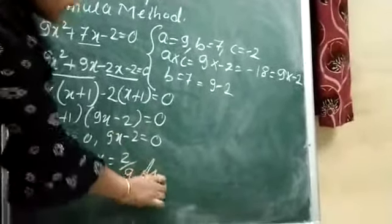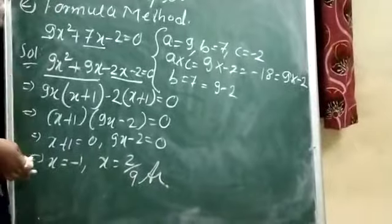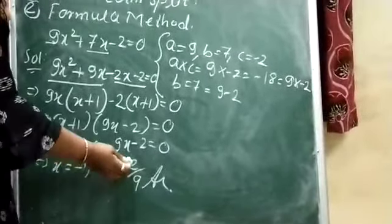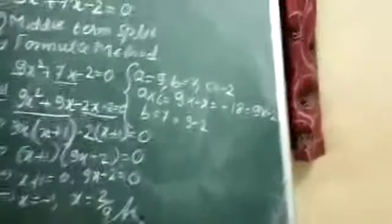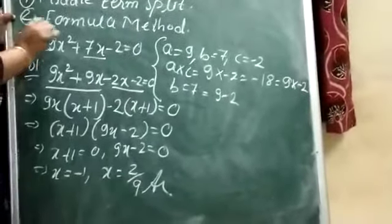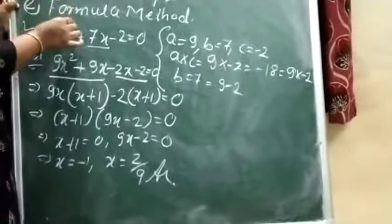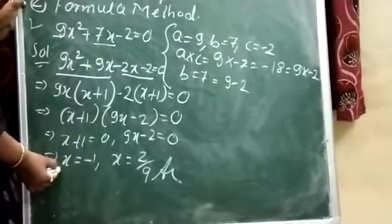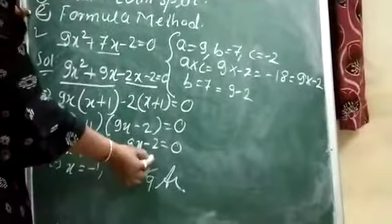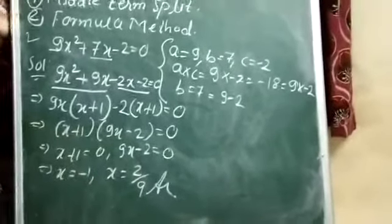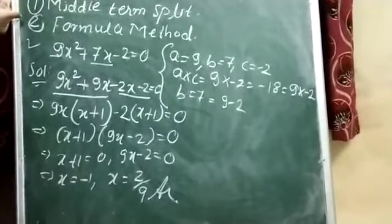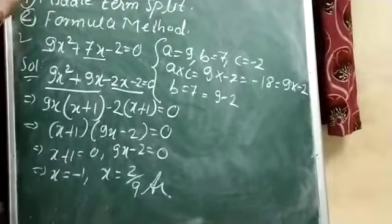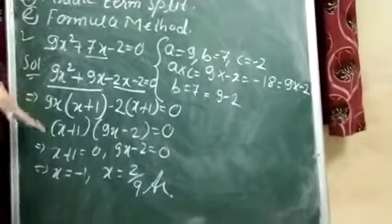So the answer is, the value of x: first value of x is -1, and second value of x is 2/9. As we are solving a quadratic equation whose highest power is 2, we are getting 2 values of x as -1 and 2/9. This is your first way. By using middle term splitting, we have solved this question.